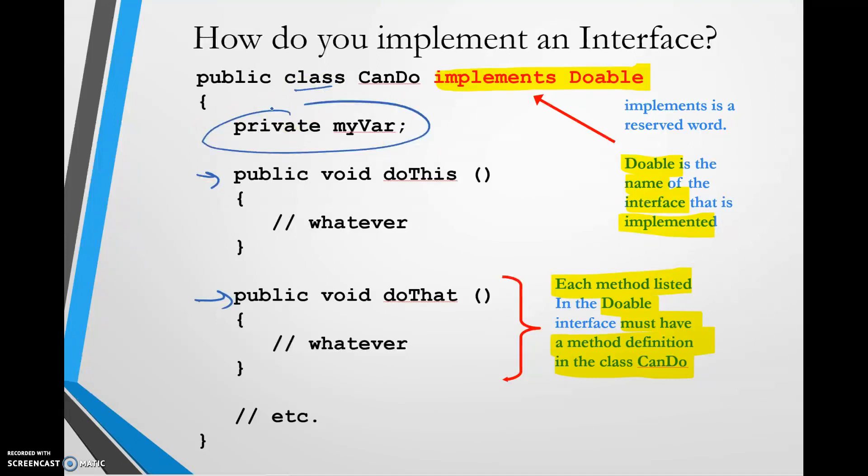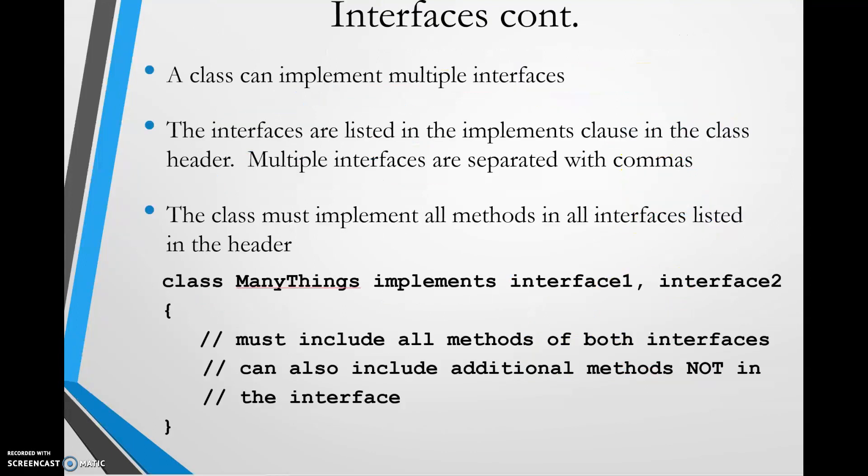Now notice that my class is allowed to create its own variable. So when a class implements an interface we can have variables, we can have its own methods, we're going to have its constructor, we're going to do everything that we've been doing all along. The only difference is that if we say that this class implements an interface, then we have to also include the code for the methods in the interface. All right, so a little bit more to build on this. Just to kind of drive everything home: a class can implement multiple interfaces. If there are multiple interfaces, then they will be separated with commas. So for example, this class ManyThings implements two different interfaces, and we just separate them with commas, and we must include all methods of both interfaces. We can also include additional methods that are not in either one of those interfaces.